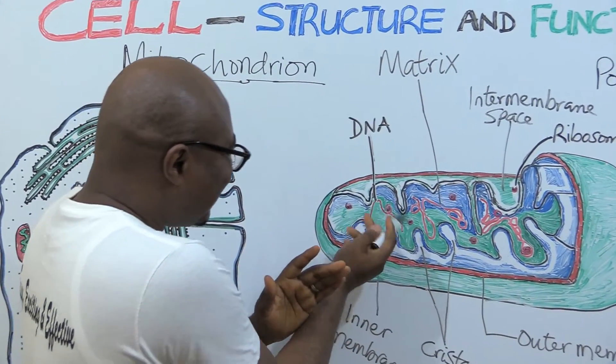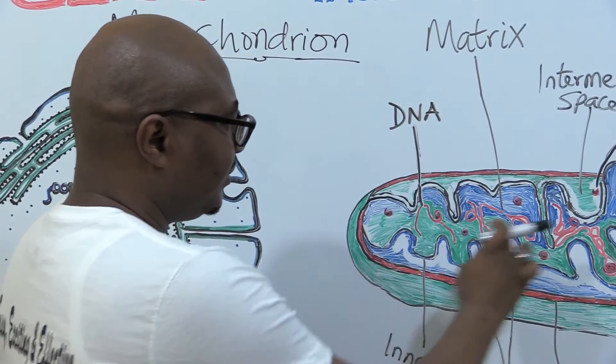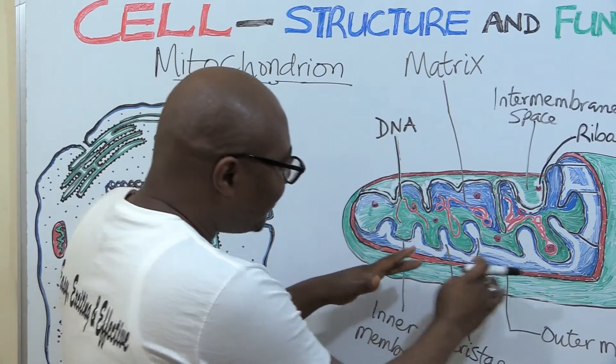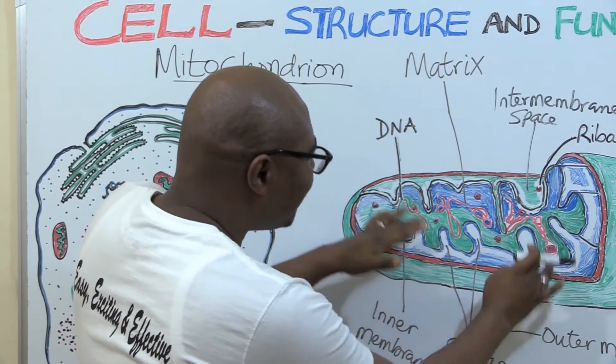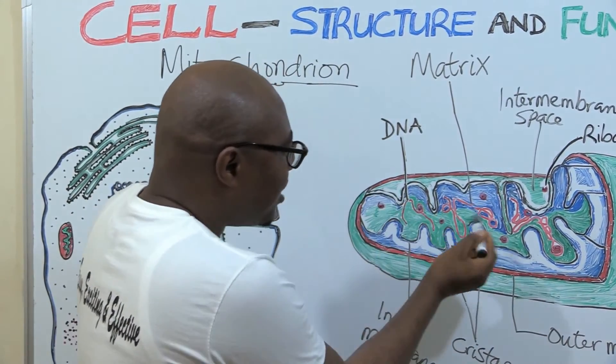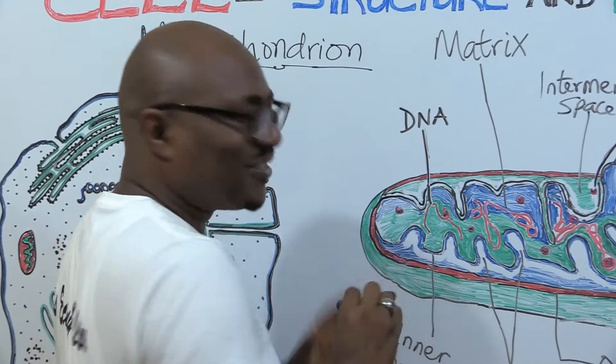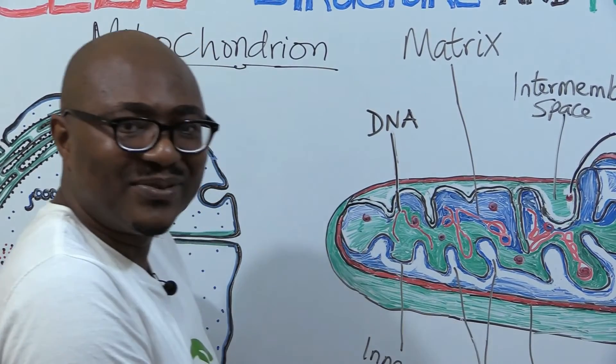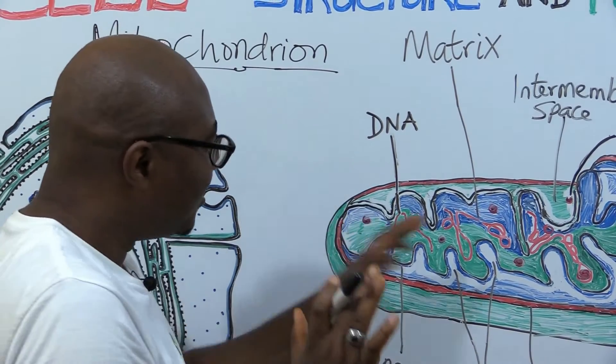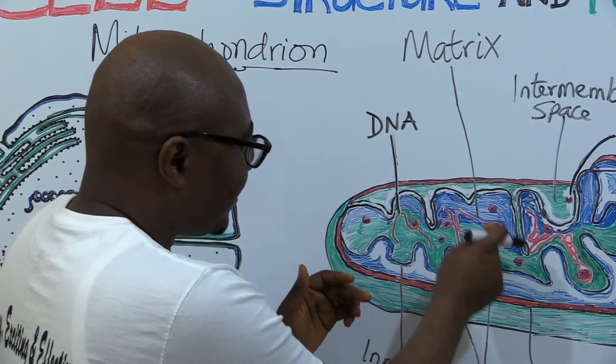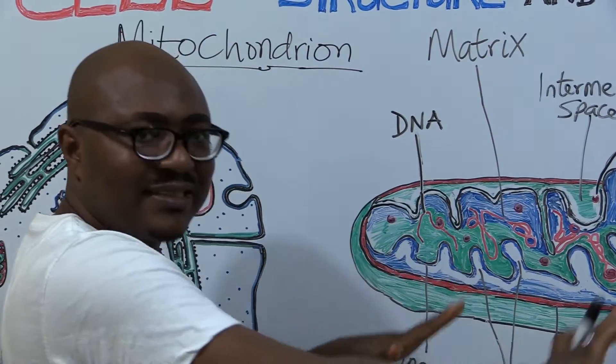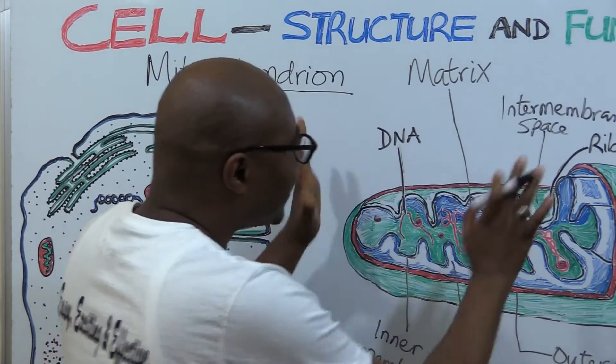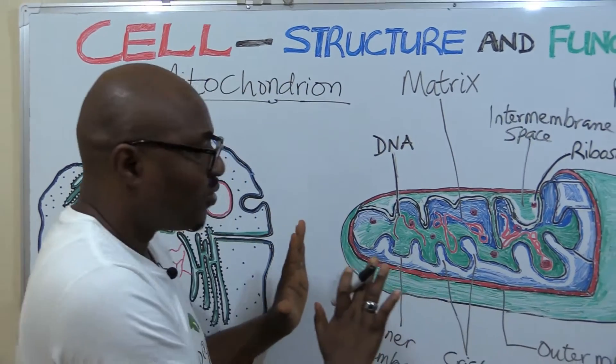Now look at the matrix. The matrix is this inner part - it's like the equivalent of the cytoplasm. When you have this outer part, this intermembrane space, you now have the inner space where you also have ribosomes. Of course, you know why ribosomes are there. Anywhere DNA is, protein synthesis happens, and ribosomes are the ones involved. So there are ribosomes located inside the matrix, that's the inner space covered by the inner membrane.